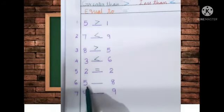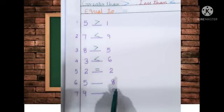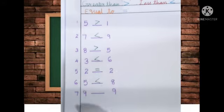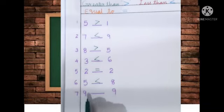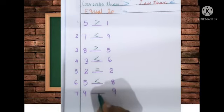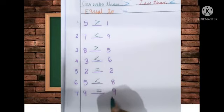Next question — number 5 and number 8. Tell me, children, which is the greater number? Yes, correct — number 8. The open mouth faces towards the bigger number. Then next, number 9 and number 9 — if the numbers are the same, we use the equal to sign. For equal to sign, we put two parallel lines or sleeping lines. 9 is equal to 9.